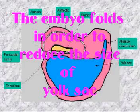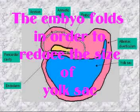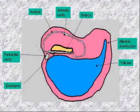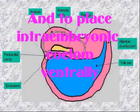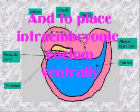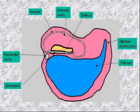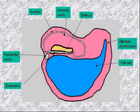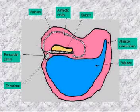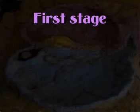Shortly after the formation of the intraembryonic mesoderm, the embryo folds laterally and anteroposteriorly in order to reduce the size of the gut formed from the yolk sac, and also to place the intraembryonic coelom ventrally.